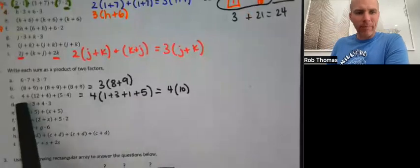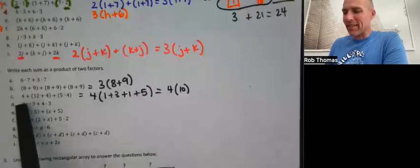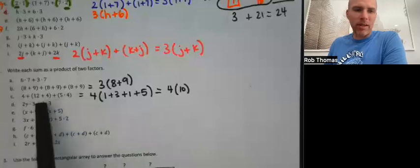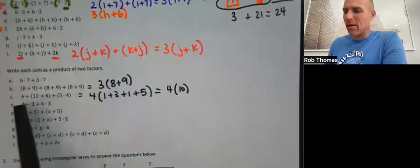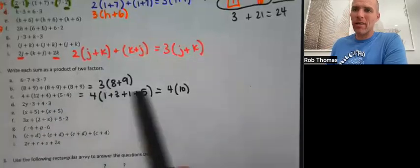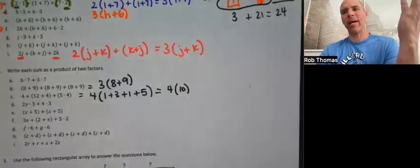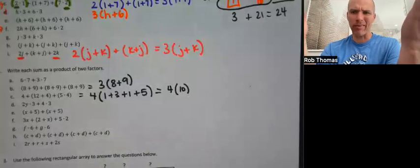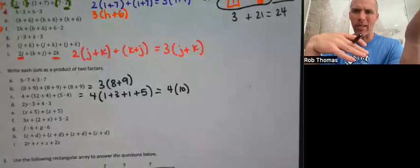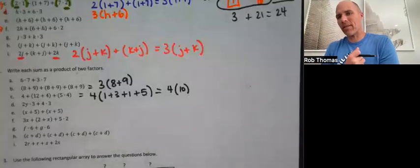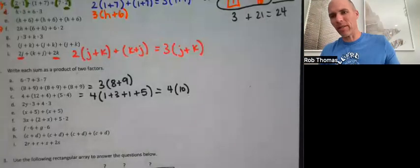Another way we could have done that one is just adding everything up. There's a multiplication, so 5×4 is 20, plus 12 plus 4 is 36, plus 4 is 40. Once we know the whole thing equals 40, we could write it as the product of any two factors: 5×8, 4×10, 2×20. If there's some other trick they want us to see, I don't see it right away.